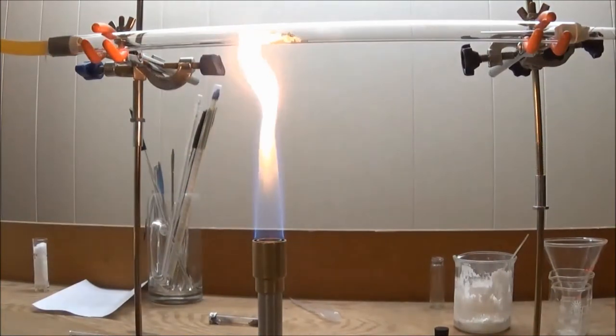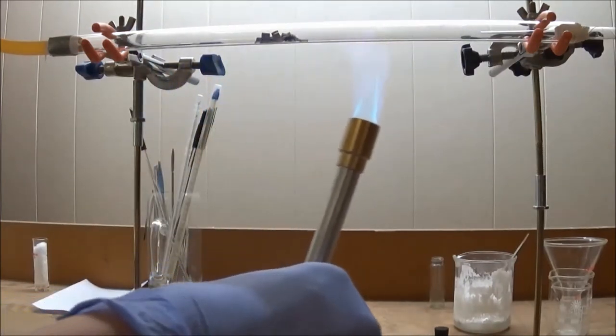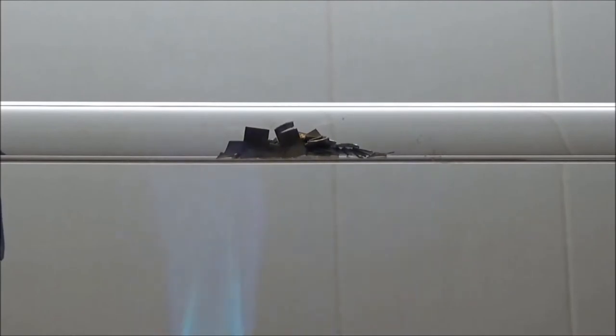After this, I lit my Bunsen burner and began to heat the magnesium. It started to take on a black color. A dark film then slowly spread over the glass.